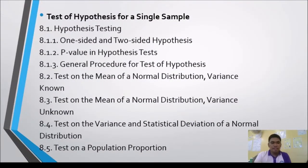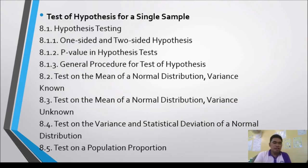The eighth topic is Test of Hypothesis for Single Samples. The first lesson introduces hypothesis testing, covering one-sided and two-sided hypotheses, p-value in hypothesis testing, and the general procedure for test of hypothesis. The second lesson covers test on the mean of a normal distribution with unknown variance, test on the variance and standard deviation of a normal distribution. The last lesson covers test on a population proportion.